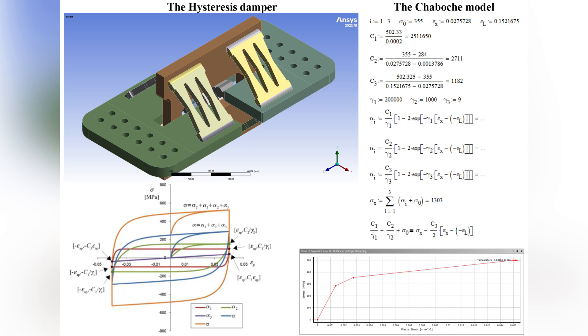The stiffness before the transition to a state of fluidity is 180.6 kN/mm. The stiffness in the state of flow is 3.6 kN/mm.